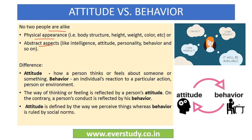Attitude and behavior are interrelated, but one cannot take a person's attitude as their behavior. On one hand, attitude represents how a person thinks or feels about someone or something — your thoughts or feelings toward a person or object. On the other hand, behavior represents an individual's reaction to a particular action, person, or environment — your conduct in response to any action, person, or environment.